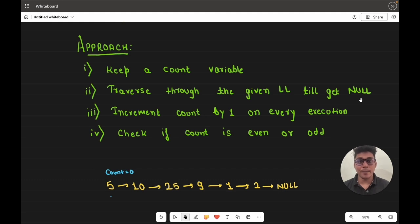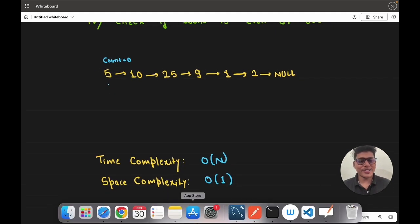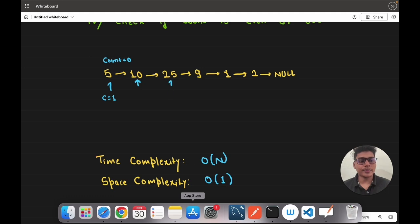Let's see one example to understand this better. We start from node 5 with count equal to zero. When we visit node 5 we increment count by 1, so count becomes 1. On node 10 count becomes 2, on node 25 count becomes 3, on node 9 count becomes 4, and on node 1 count becomes 5. Every time we visit any node we increment count by 1.